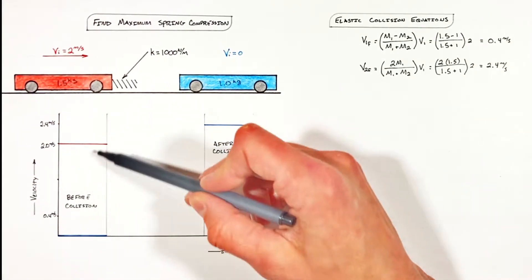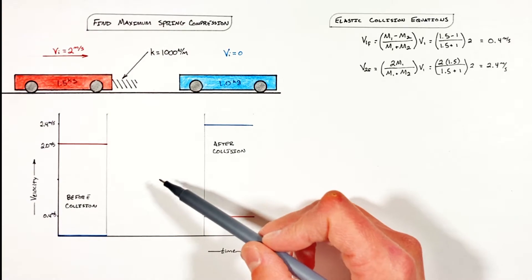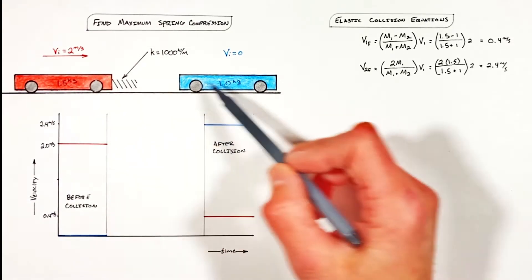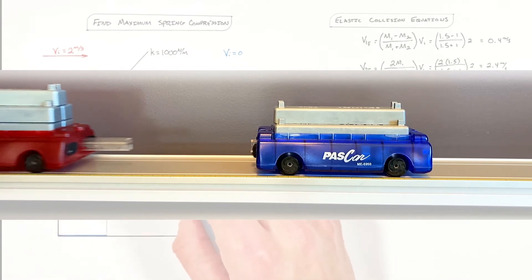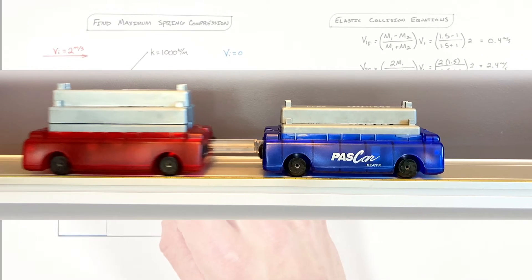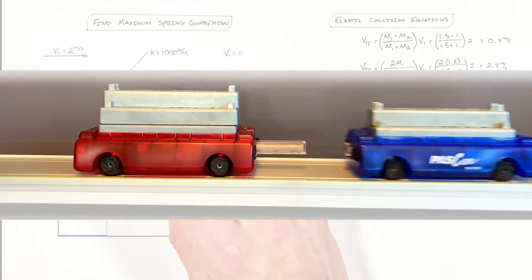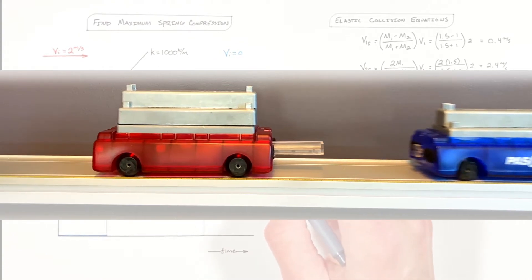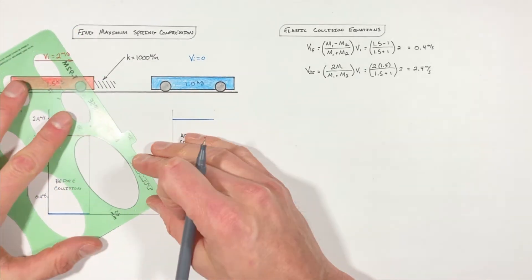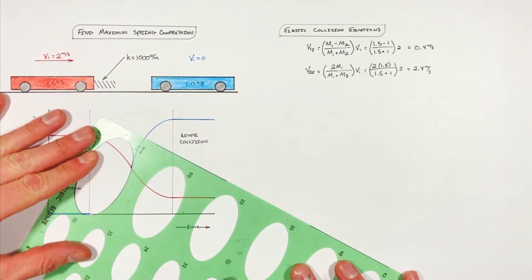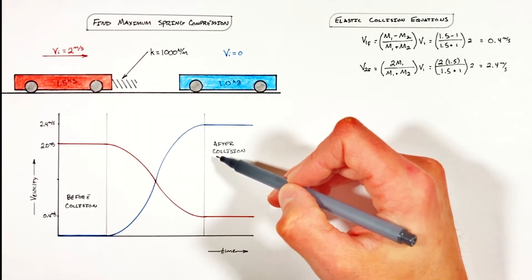The problem tells us what's happening before the collision and the elastic collision equations tell us what's going on after, but during the collision we don't really have any idea. As the red cart moves forward, the spring makes contact with the blue cart. The red cart gradually starts to slow down as the spring compresses and produces a spring force, and that spring force pushes the blue cart forward. So on our graph we see the velocity of the red cart steadily decrease and the velocity of the blue cart steadily increase.